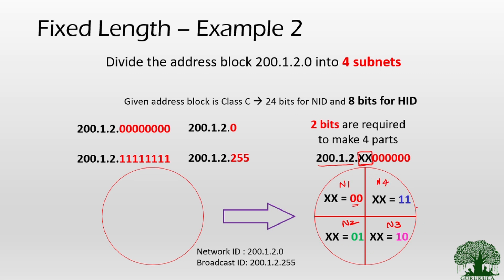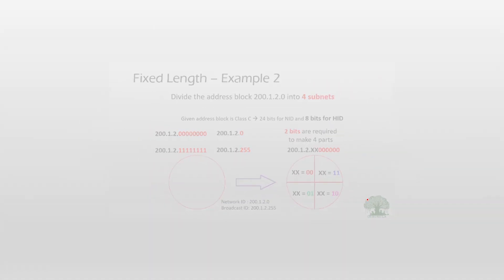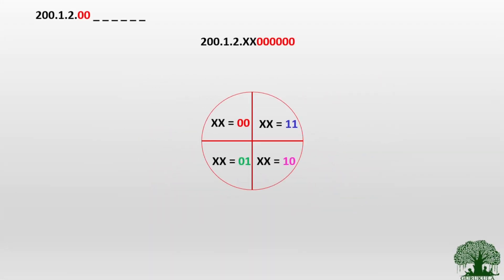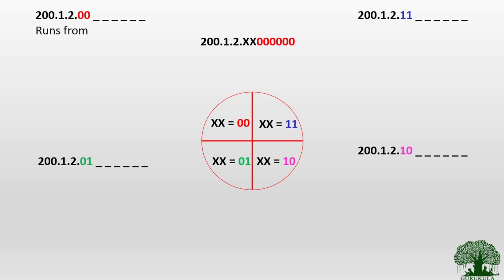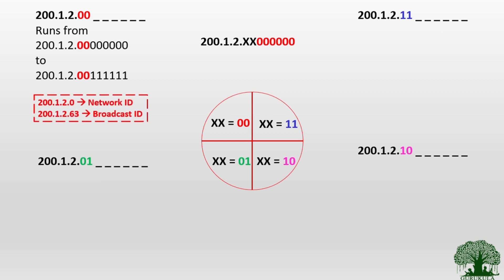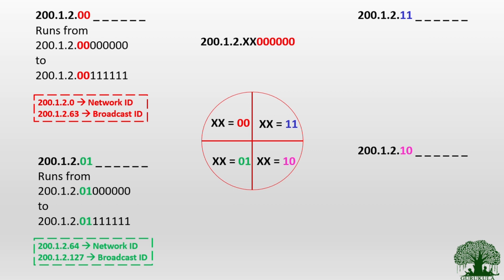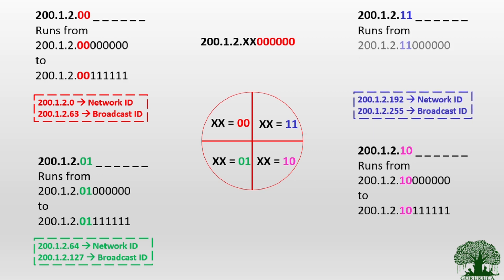For each subnet, we find the network ID and broadcast ID by freezing the two borrowed bits. When XX=00, that is subnet one; XX=01 is subnet two; XX=10 is subnet three; and XX=11 is subnet four. Only six remaining host bits vary from all zeros to all ones within each subnet.